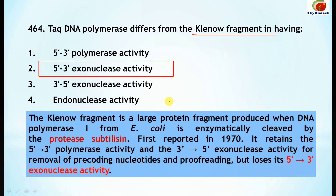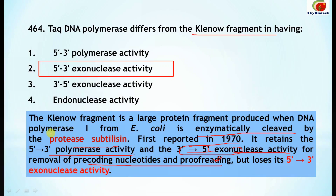The Klenow fragment is a large protein fragment produced when DNA polymerase I from E. coli is enzymatically cleaved by the protease subtilisin, first reported in 1970. It retains 5 prime to 3 prime polymerase activity and 3 prime to 5 prime exonuclease activity for removal of pre-coding nucleotides and proofreading.